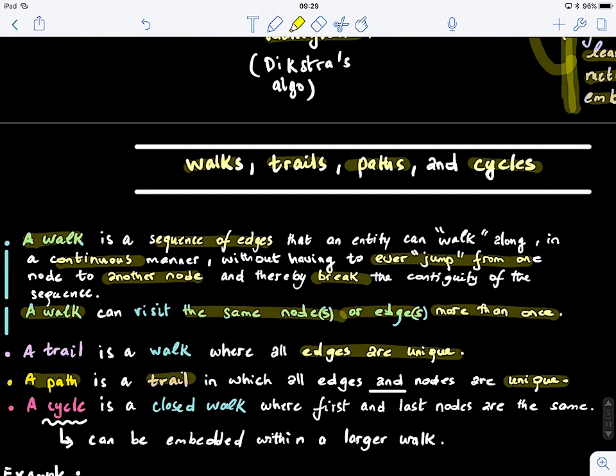Now, a cycle is a closed walk. In a walk, you can visit nodes and edges multiple times, so it's a closed walk where first and last nodes are the same. A cycle can be embedded within a larger walk, so a walk can have multiple cycles.